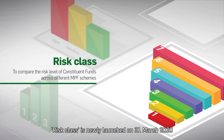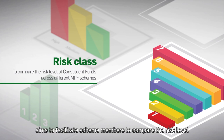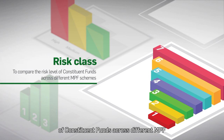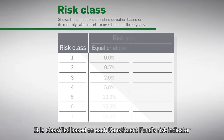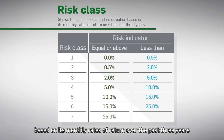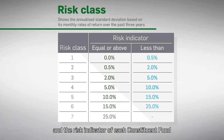Risk Class is newly launched on 31st March 2020. It is a seven-point risk classification scale that aims to facilitate scheme members to compare the risk level of constituent funds across different MPF. It is classified based on each constituent fund's risk indicator, which shows the annualized standard deviation based on its monthly rates of return over the past three years. The risk indicator of each constituent fund is available on the quarterly fund fact sheet.